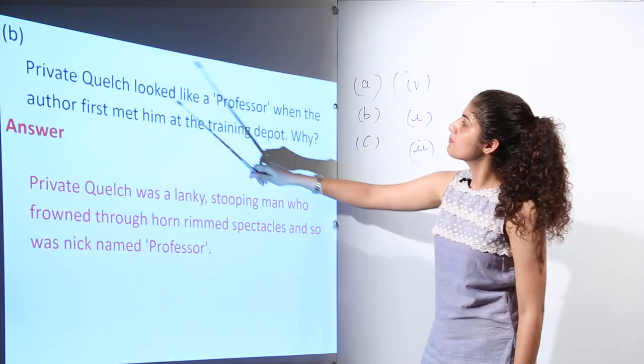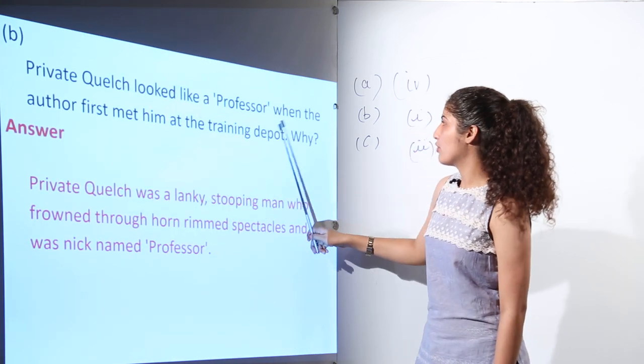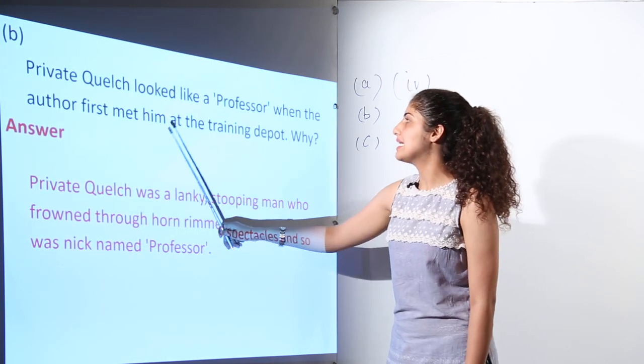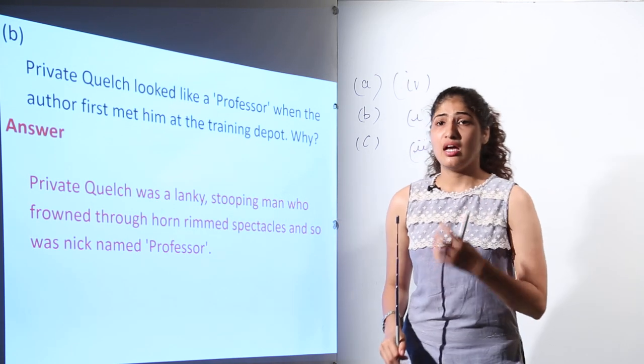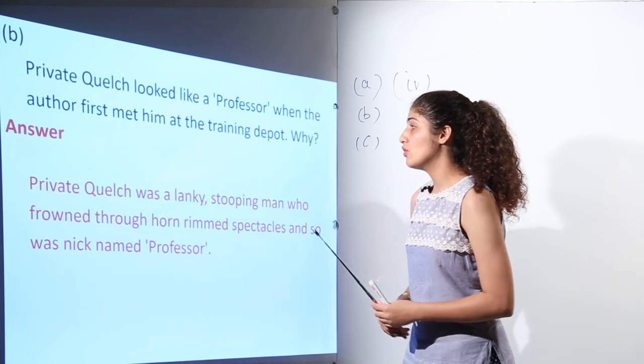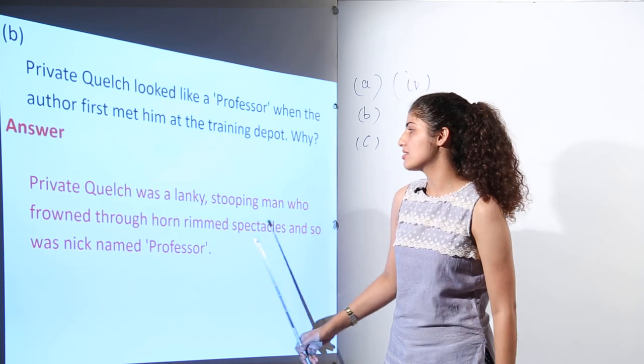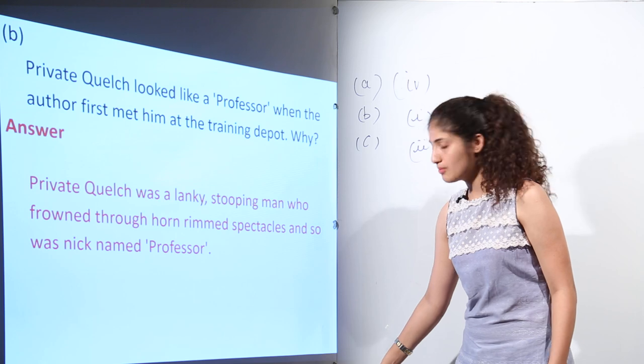Next question is, Private Quelch looked like a professor when the author first met him at the training depot. Why? Because he was a serious, lanky, stooping man who frowned through horned rimmed spectacles and thus he was named as professor.